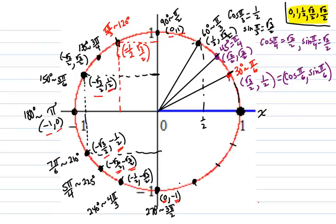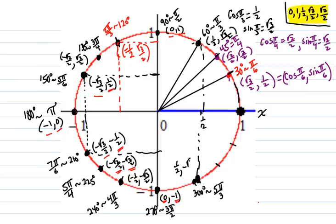This point is 30 degrees past 270 — a 300-degree angle, coterminal to 5π/3. The coordinates of that point: it's a little tricky on the picture, but it's 1/2, comma, negative √3/2. That's the cosine and the sine of 5π/3.